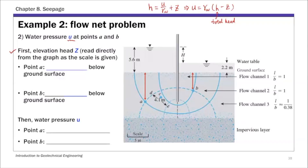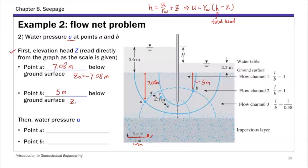The key is to get the elevation head z, which we read directly from the graph using the given scale — 5 meters represented on the diagram. For point A, this value is 7.08 meters, so point A is 7.08 meters below ground surface, meaning ZA equals negative 7.08. For point B, reading from the graph, it is 5 meters below ground surface, so ZB equals negative 5.